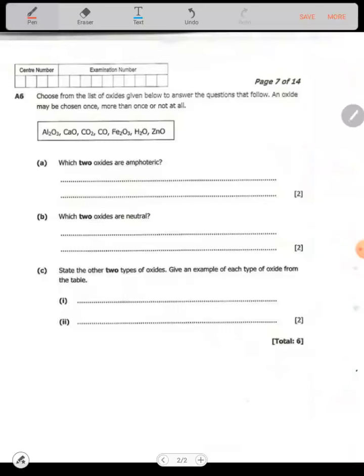So the first one is zinc oxide (ZnO) is one of them, and iron(II) oxide (FeO) is the other amphoteric oxide.